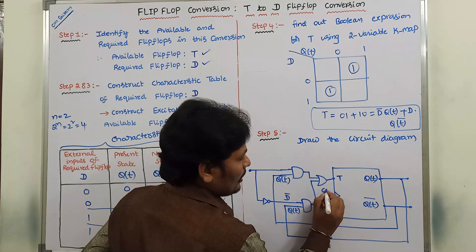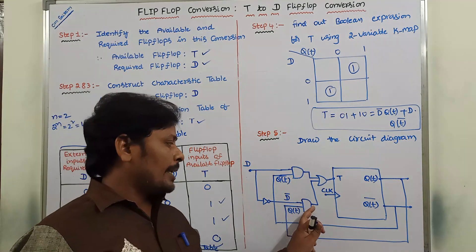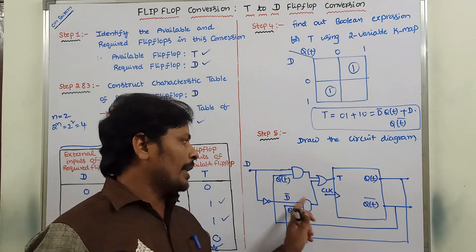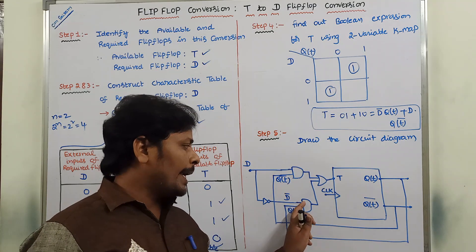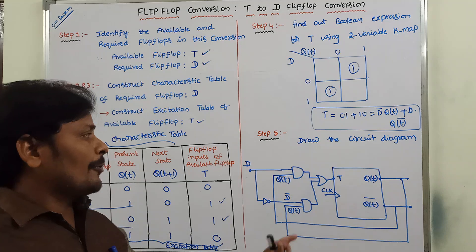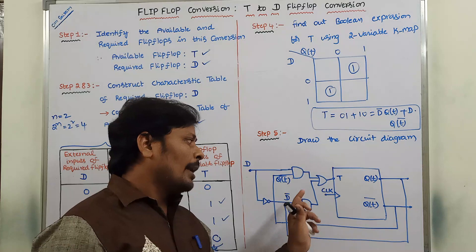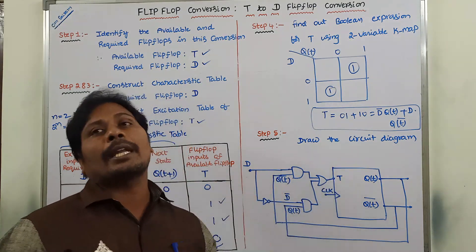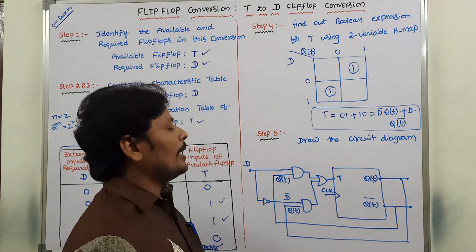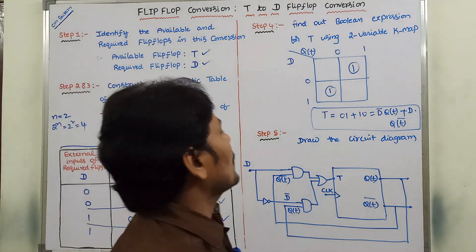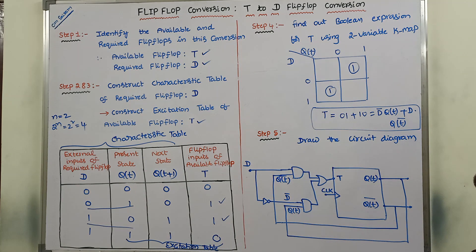A clock input is also connected. The expression D̄·Q(t) comes from one AND gate, and D·Q̄(t) from the other. These two AND gate outputs are sent to the OR gate, giving D̄·Q(t) + D·Q̄(t) connected to the T input. The T flip-flop then produces two outputs: Q(t) and Q̄(t). This completes the procedure for converting a T flip-flop to a D flip-flop.